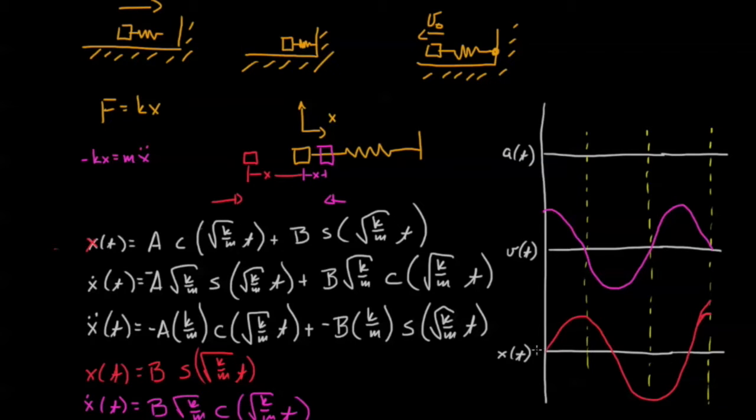So we have something that looks like this. Now let's see if this makes sense. Our position, our deviation from normal, this means the spring is compressing, and when it's compressed all the way we expect the velocity to be zero. And in fact that's what we see here.